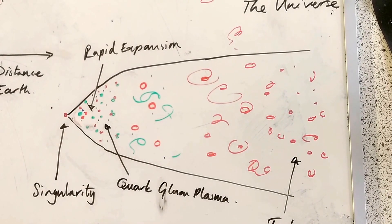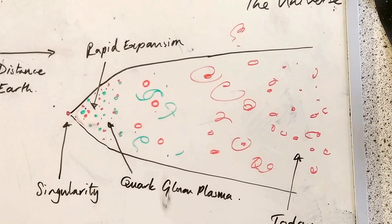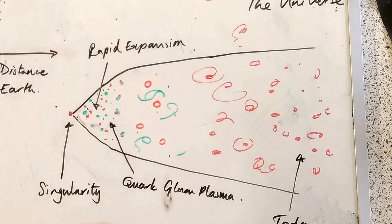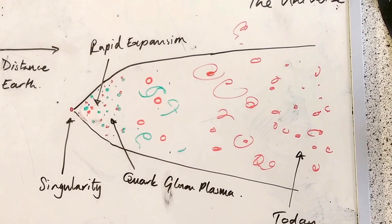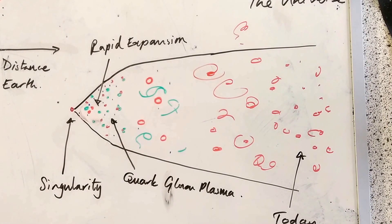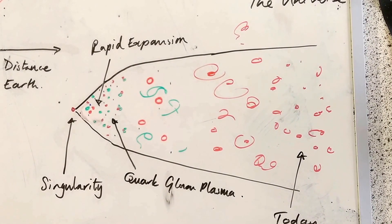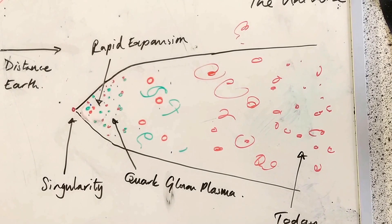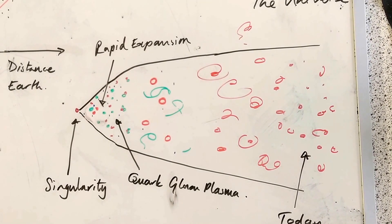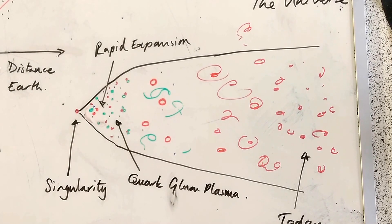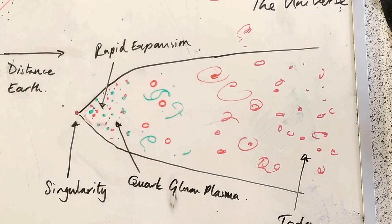Then, there was very rapid expansion. And we had what we call the quark-gluon plasma, where we didn't even have protons and neutrons. Then, the protons and neutrons formed from this quark-gluon plasma. The atoms rubbed together, got hot, and started doing nuclear fusion.